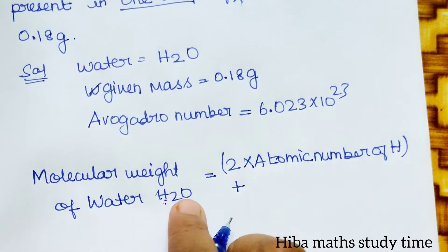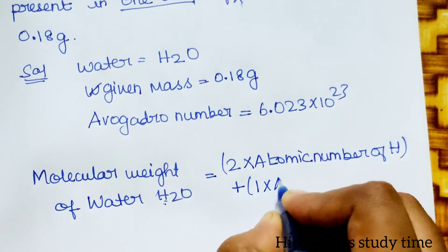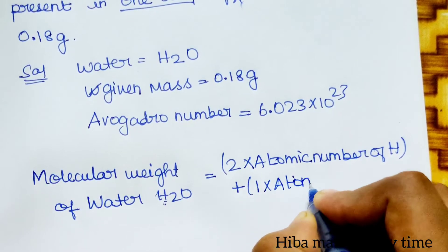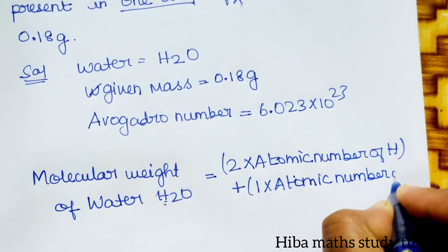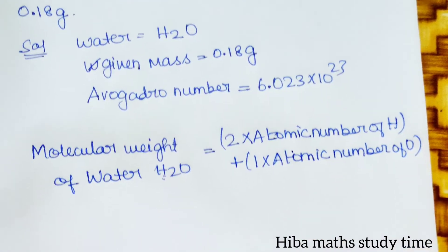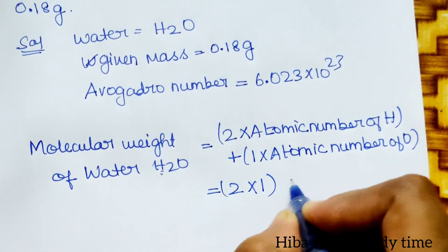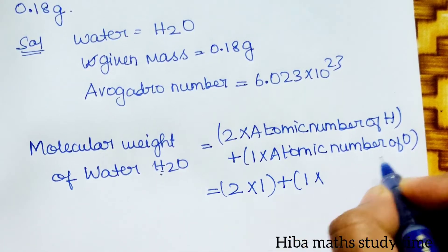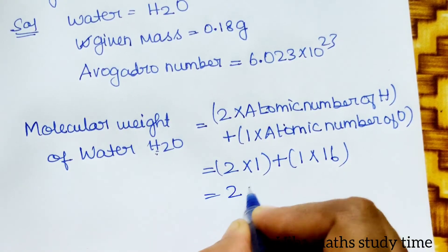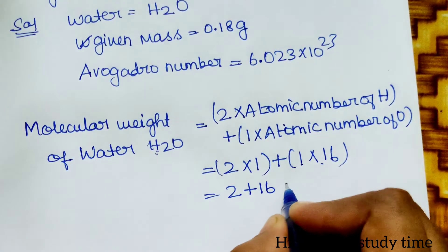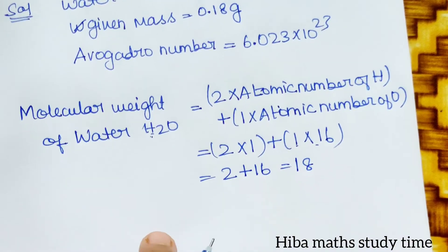For H₂O: the atomic number of hydrogen is 1, so 2 into 1 equals 2. The atomic number of oxygen is 16, so 1 into 16 equals 16. Adding them: 2 plus 16 equals 18. So the molecular weight, that is gram molecular mass, is 18.